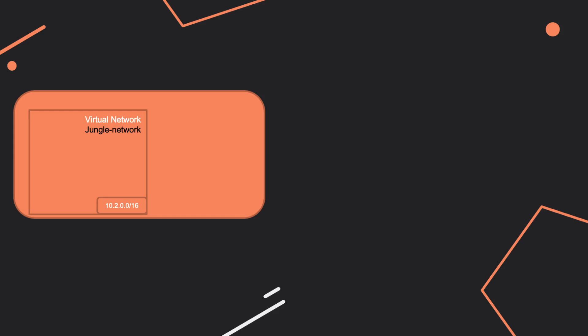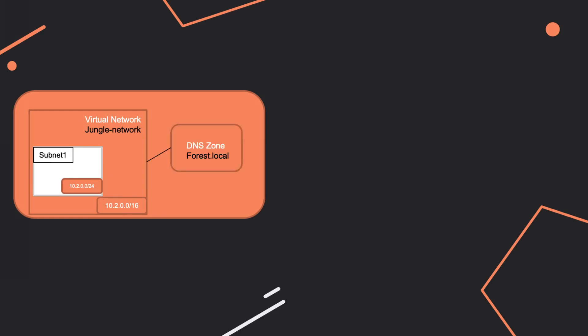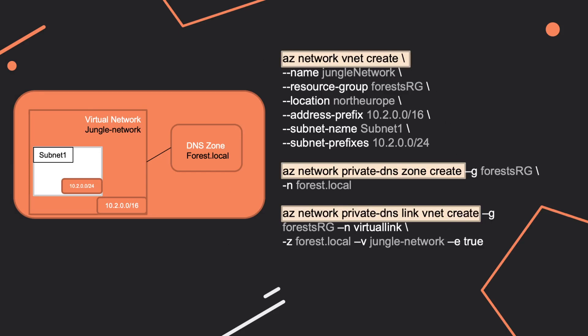Let's imagine we create a virtual network called Jungle Network with a specific IP. Inside this virtual network, we create a subnet with its IP address. We also create a DNS zone called Forest Local. What you see here is a virtual network link connecting the virtual network with the DNS zone. You'll be given a script and asked to fill in the missing lines.